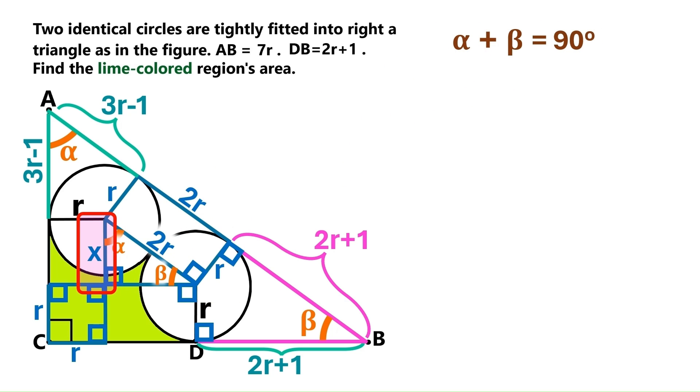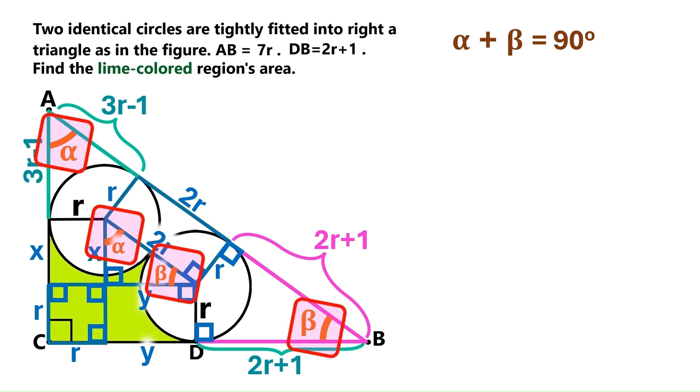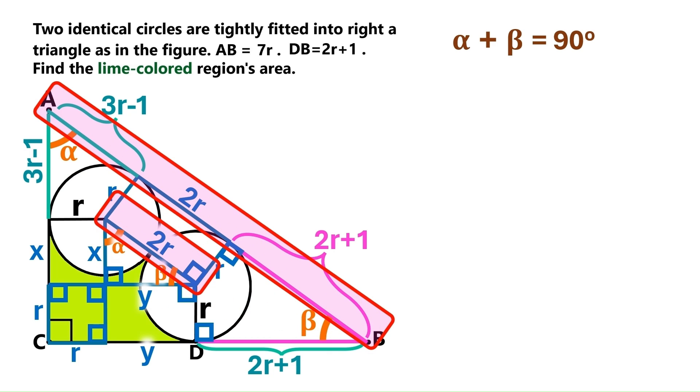Now, we'll call this side x, and this segment over here is also x, and we'll call this side y, and this segment over here is also y. Now, this tiny right triangle is similar to this big right triangle, because they have the same angles. That means these two sides are proportional.